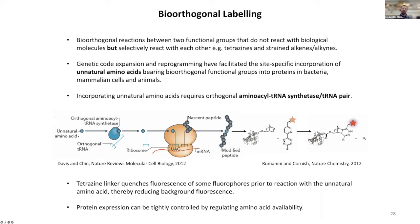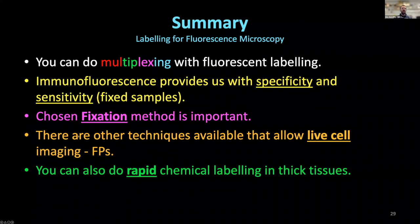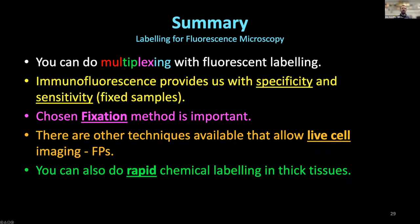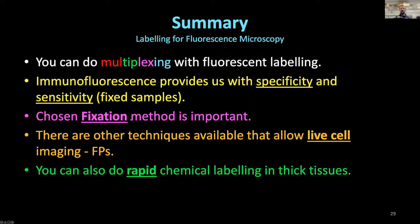In summary, fluorescent labeling gives you multiplexing capability with high specificity and sensitivity in fixed samples. The choice of fixation method is important for this to work properly. For live cell imaging, compartment dyes and fluorescent proteins are very powerful. Rapid chemical labeling in thick tissues is also achievable with SNAP, CLIP, Halo, and bioorthogonal approaches.